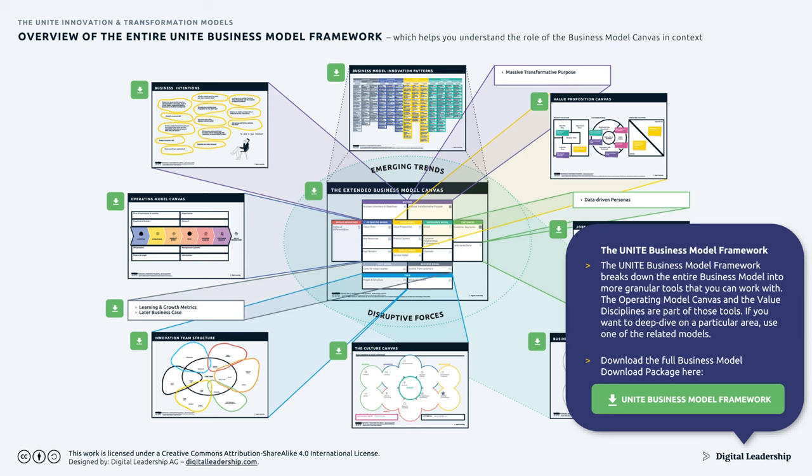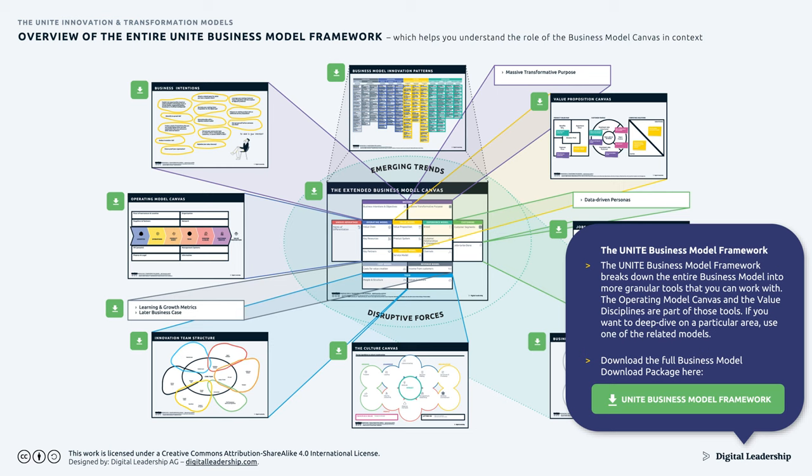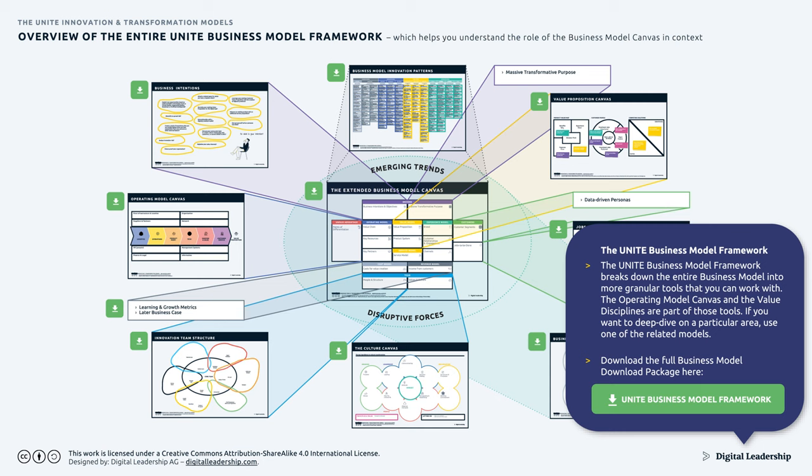The UNITE operating model canvas integrates with the rest of the UNITE models. The business model framework — the first of its kind globally — shows the business model canvas in the very center, and depending on what aspect you're interested in, you can zoom in and develop those details with related models. For example, you can deep dive on your value model with the value proposition canvas, on your operating model with the operating model canvas, or reinvent your business model with the UNITE business model innovation patterns. You can discover and freely download all of those models, tools, and canvases at digitalleadership.com/unite.